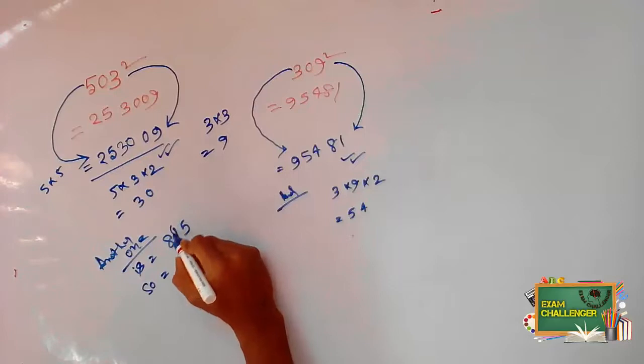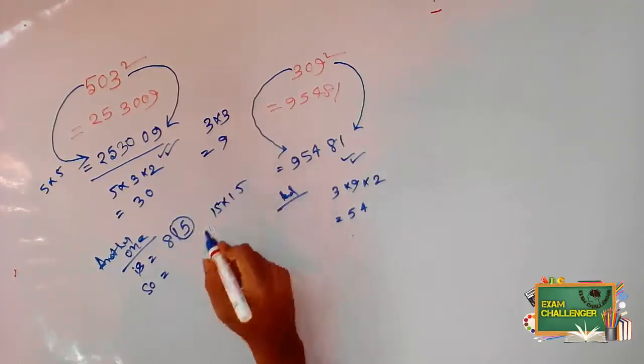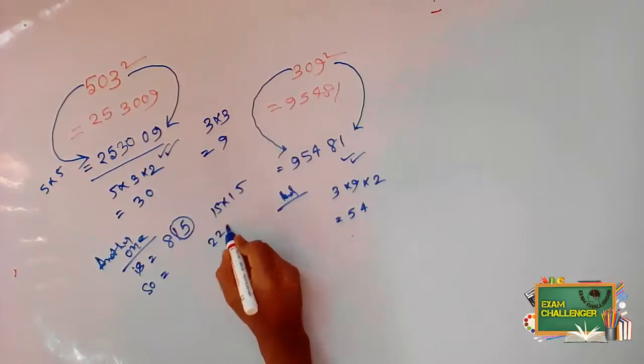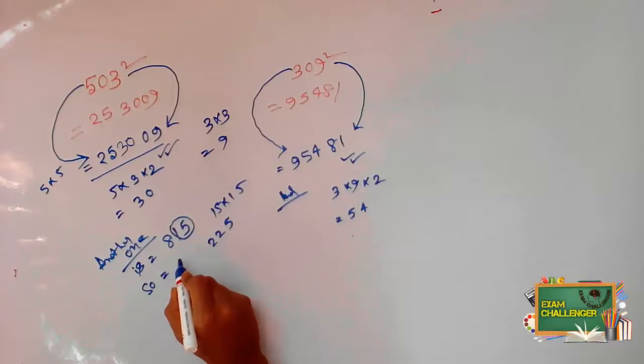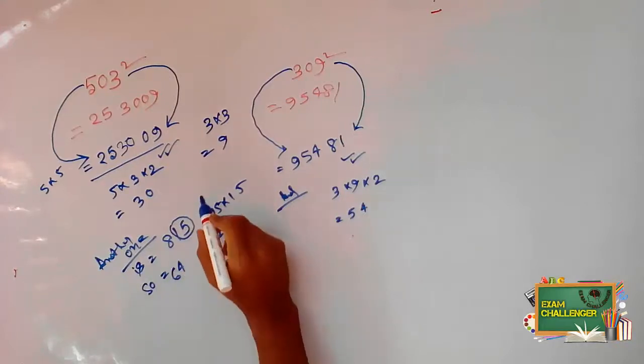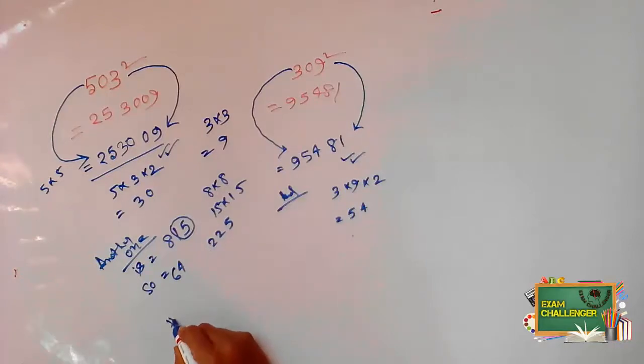Next, the square of 14. We did the square of 14. The square of 14 becomes 196.